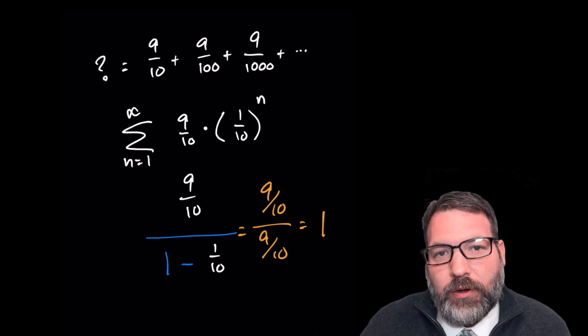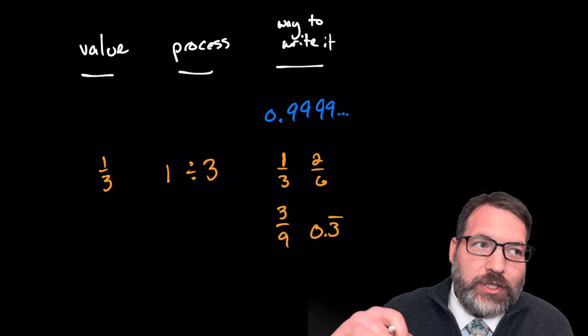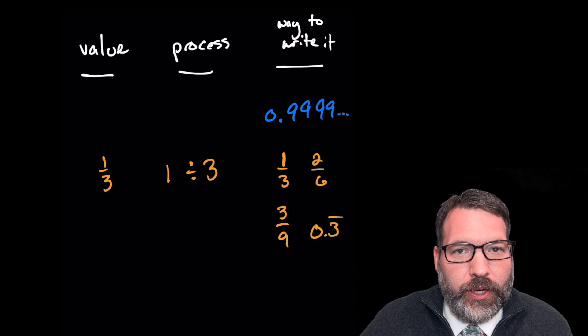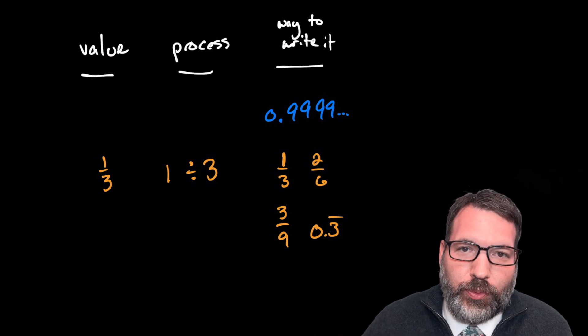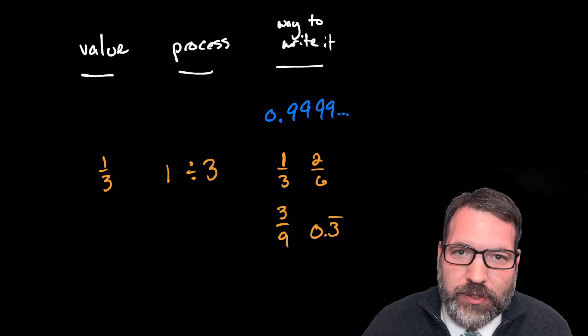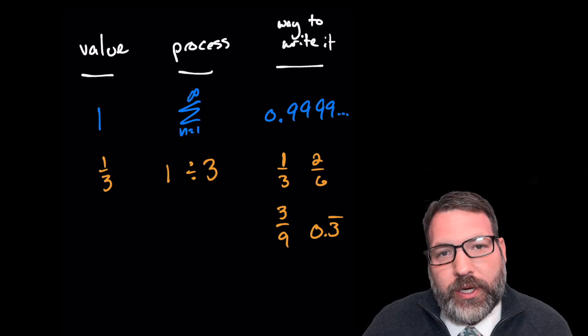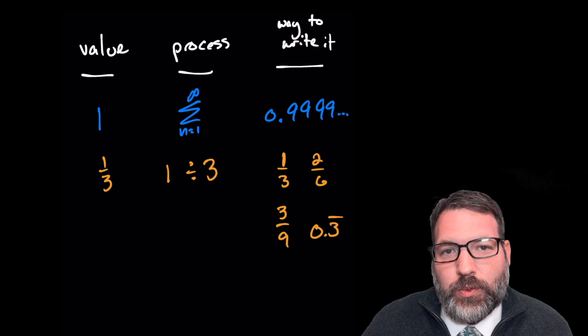So strange as it may be, 0.9 repeating — not stopping at some point, not just a lot of nines after the decimal point, but actually infinitely many nines, or equivalently the infinite sum nine tenths plus nine hundredths plus nine thousandths — by that process of taking an infinite sum, we can actually confirm that the value 0.9 repeating is the same as one. This is one of those concepts that as a math teacher I always get pushback from students. So if you don't really trust the idea that 0.9 repeating should be equal to one, I would love to hear from you.